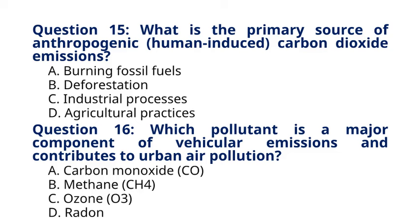Question 16. Which pollutant is a major component of vehicular emissions? A. Carbon monoxide, CO. B. Methane, CH4. C. Ozone, O3. D. Radon. The correct answer to question 16 is option A. Carbon monoxide, CO. Explanation: carbon monoxide, CO, is a toxic gas emitted from vehicle exhausts, combustion engines, and industrial processes, contributing to urban air pollution and adverse health effects.